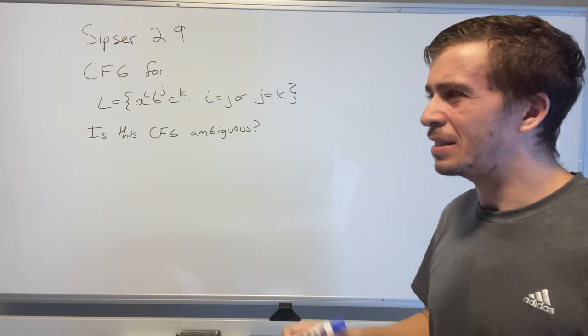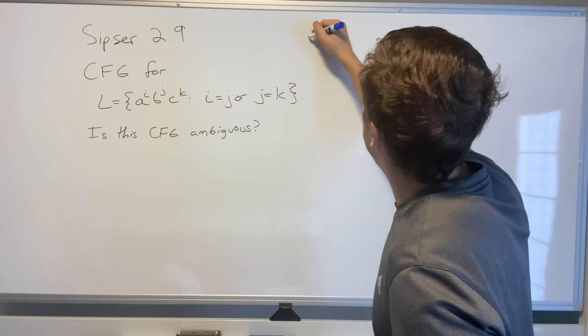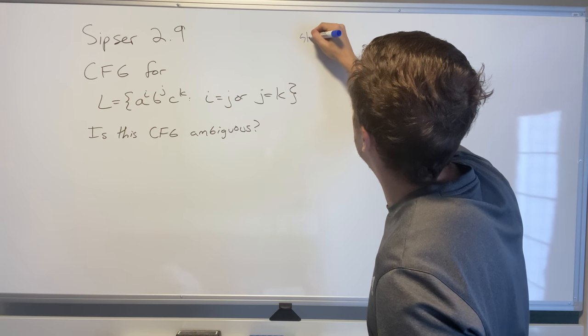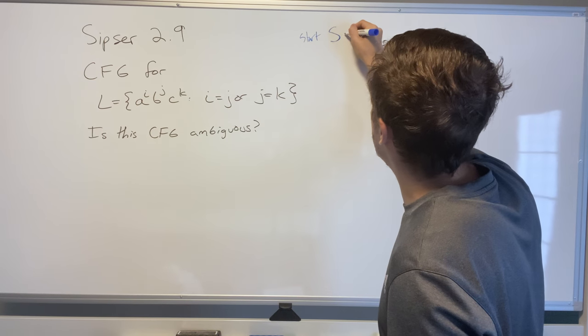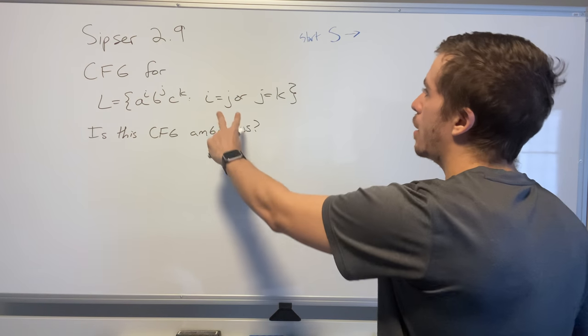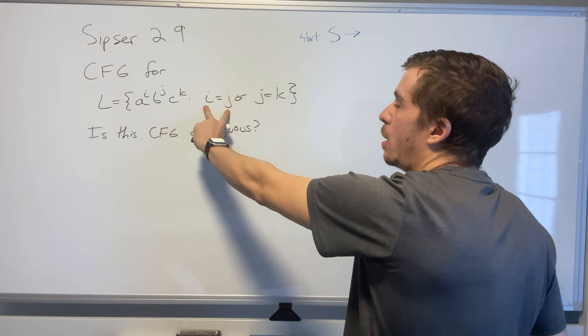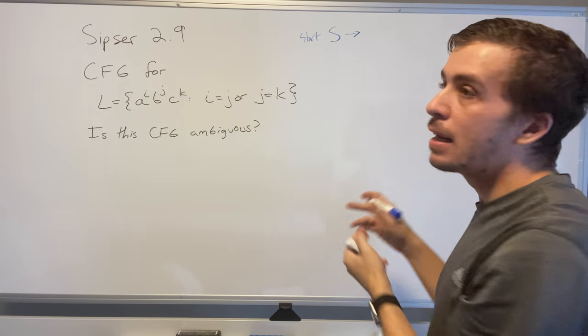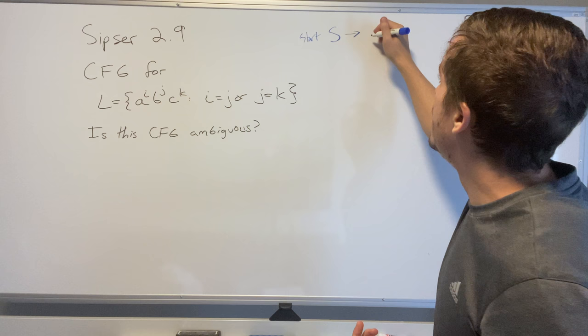There are many ways to approach this. I'm going to have a start variable, so here's the start variable S, where I'm going to make a little grammar that does this part and a little grammar that does this part, and then go to the union of the two.